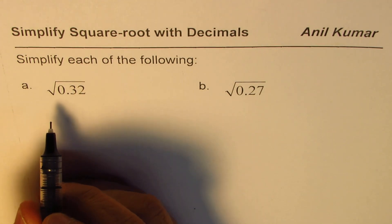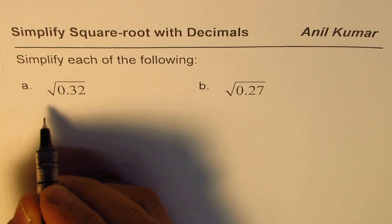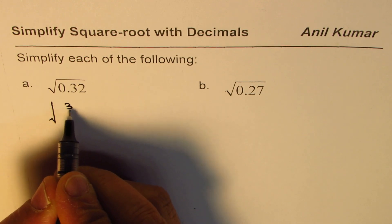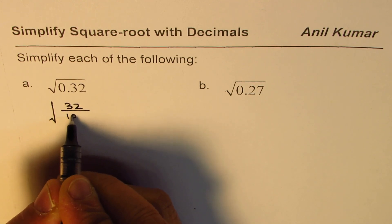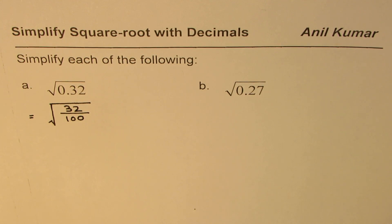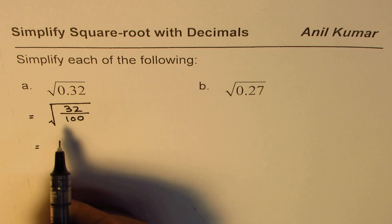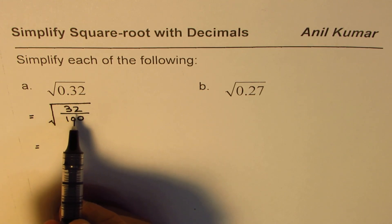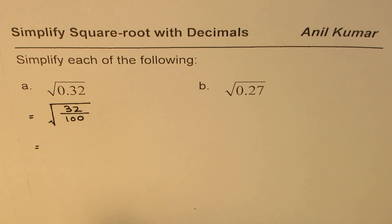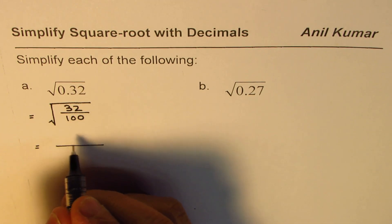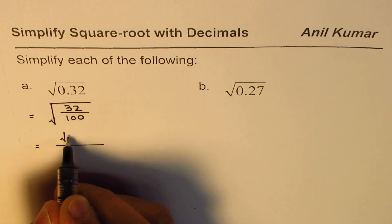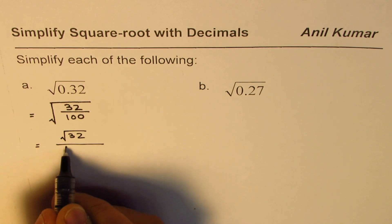The first step is: whenever you have decimal numbers within a square root, we write them as a fraction. So 0.32 can be written as 32 over 100, since 32 over 100 equals 0.32. Then we write this as square root of 32 divided by square root of 100, separating the numerator and denominator.